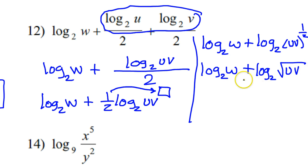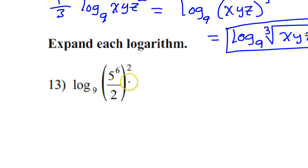Now when you're condensing, addition condenses down to multiplication. So I can write this as a single log. My final answer would be log base 2 w times the square root of uv. So this would be the final answer for number 12. Okay, now we are expanding. So it's like we're doing the opposite of what we just did.